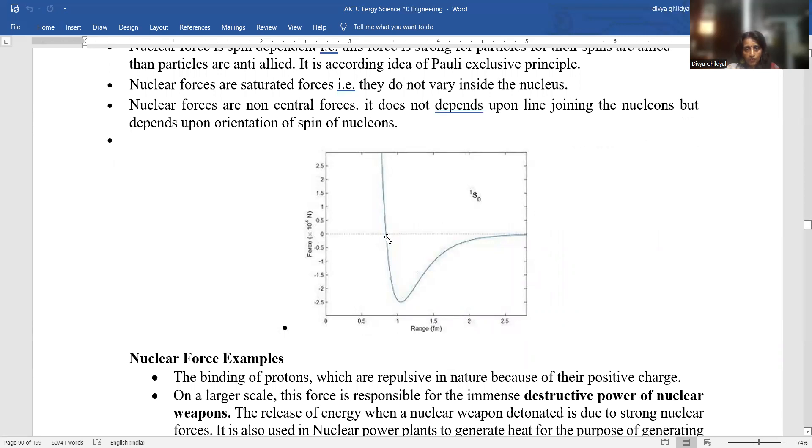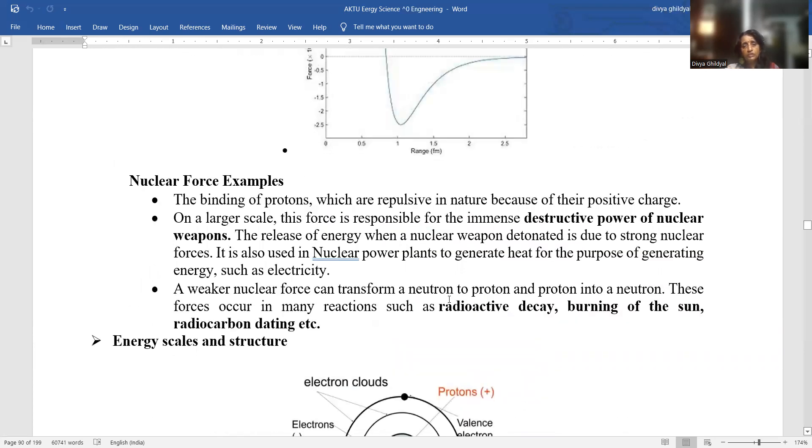So this graph is showing you a variation of nuclear forces as further range. Examples of nuclear forces, the binding of protons which are repulsive in nature because of their positive charge. On large scale this force is responsible for the immense destructive power of nuclear weapons. A weaker nuclear force can transform a neutron to proton and a proton into a neutron. These forces occur in many reactions such as radioactive decay, burning of the sun, radiocarbon dating.